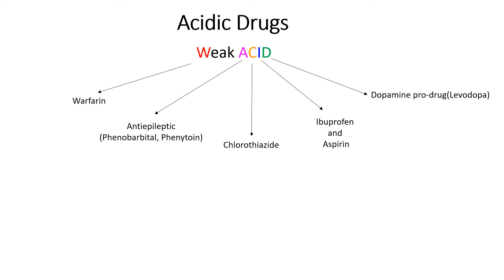W is for warfarin. A is for the anti-epileptic drugs such as phenobarbital or phenytoin. C is for chlorothiazide. I is for ibuprofen and aspirin. And D is for dopamine prodrugs such as levodopa.